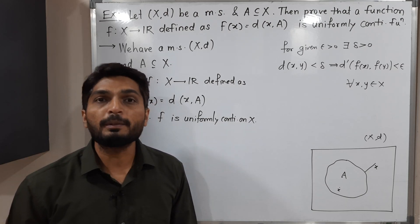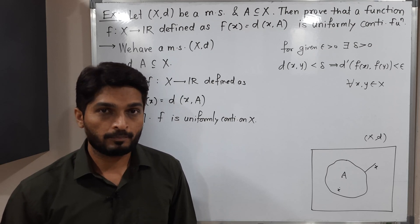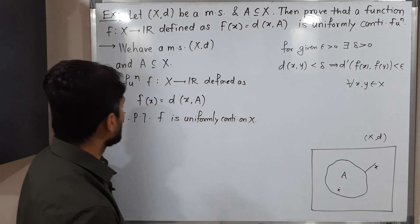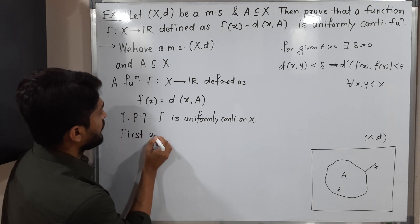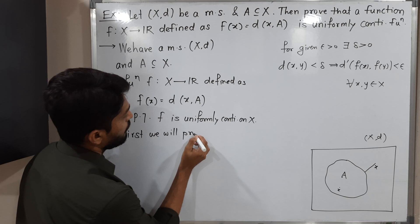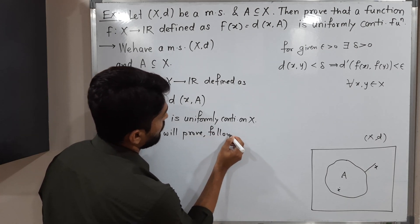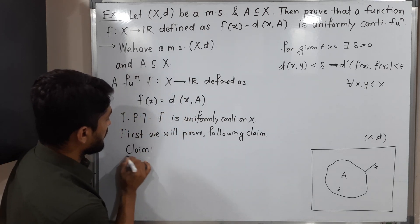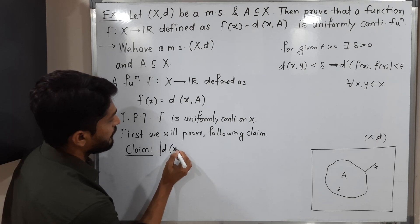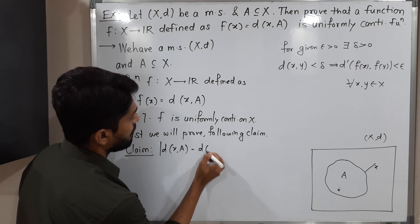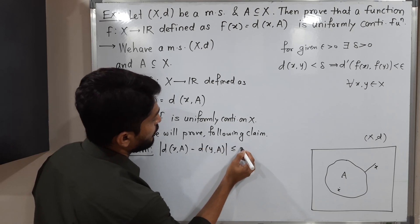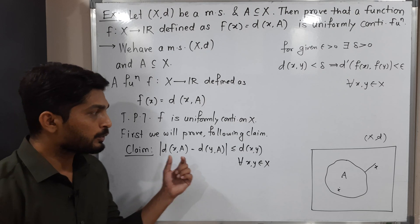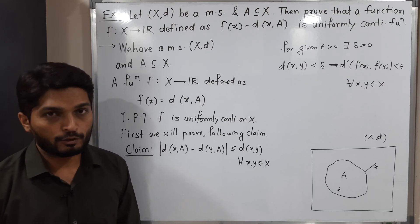Before proving it is uniformly continuous, we are going to prove one result by considering it as a claim. We will prove it and using it we will prove uniform continuity. So let me write the claim here. Our claim is: |d(x,A) - d(y,A)| ≤ d(x,y), and this is true for any points x, y belonging to X. We are going to prove this first and then use it.